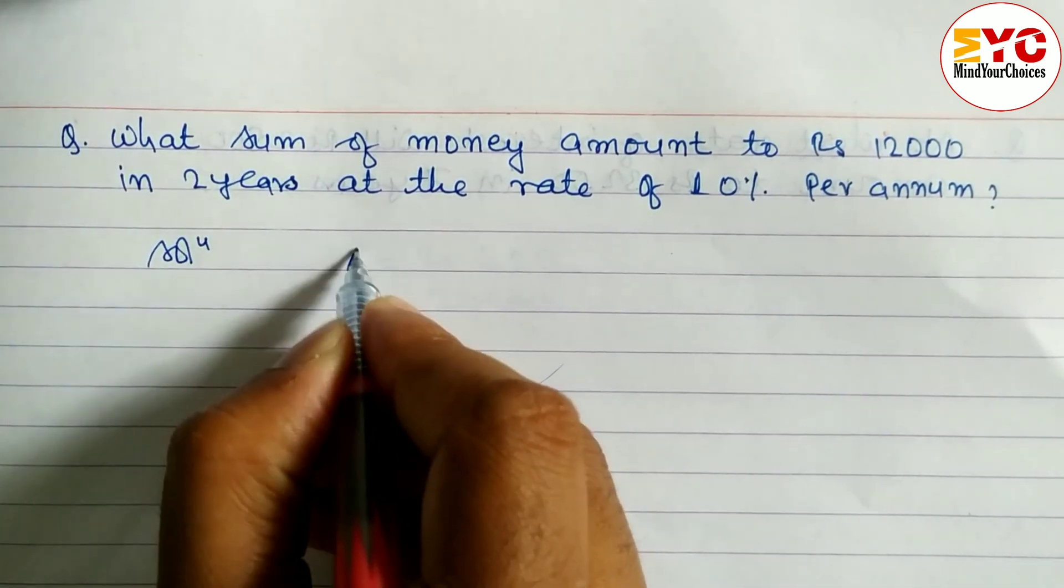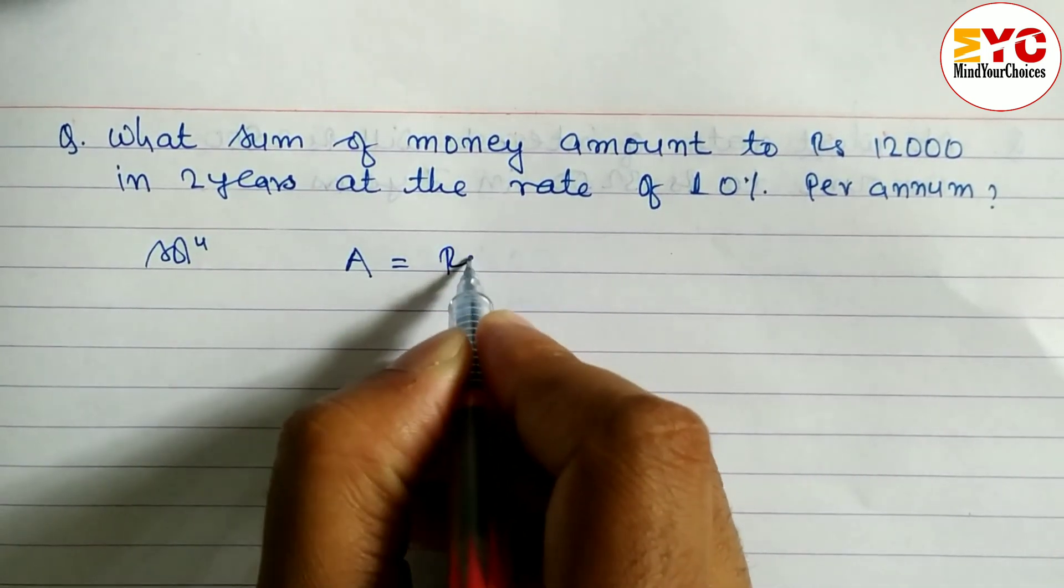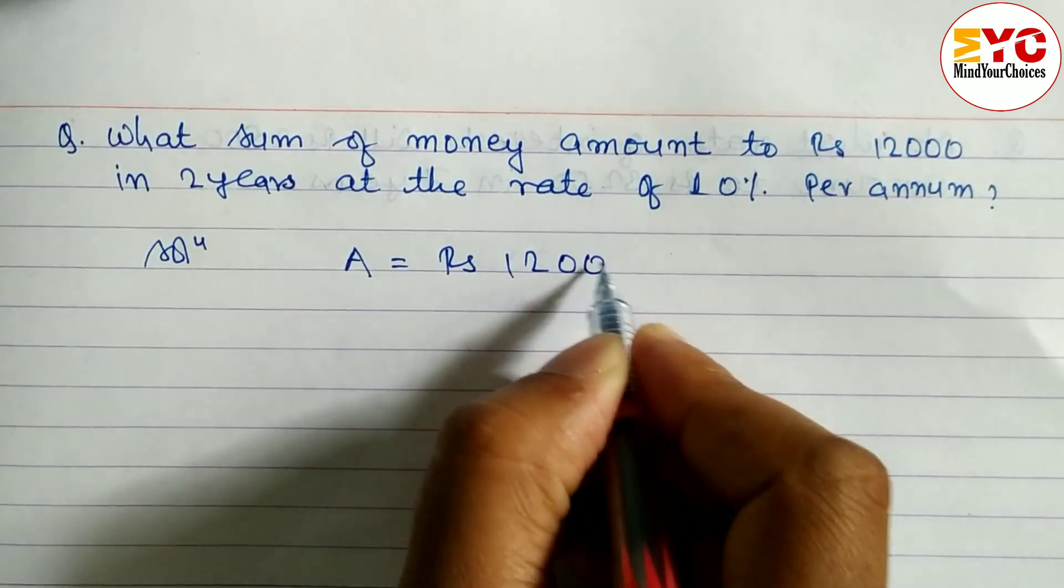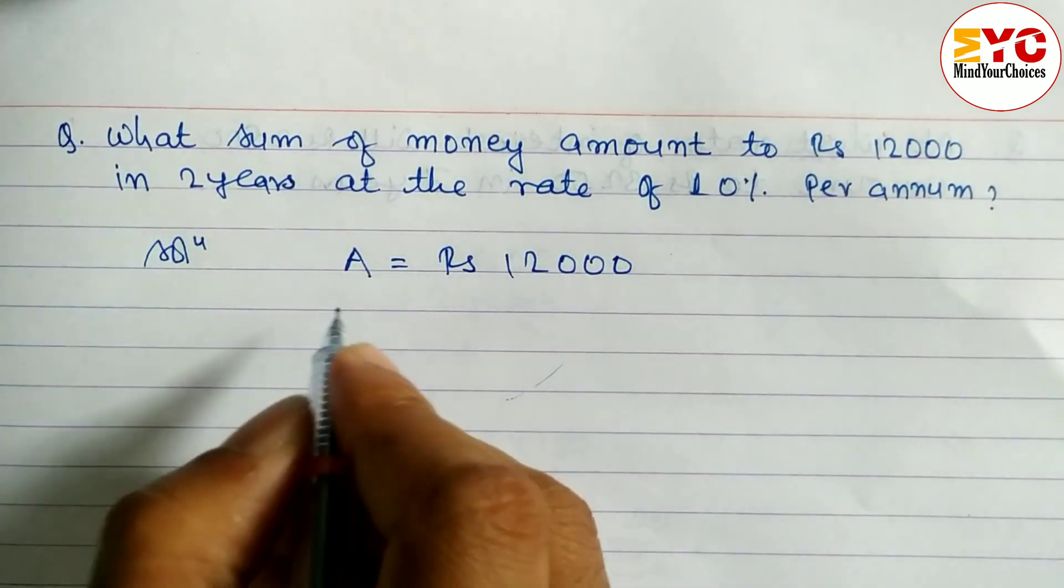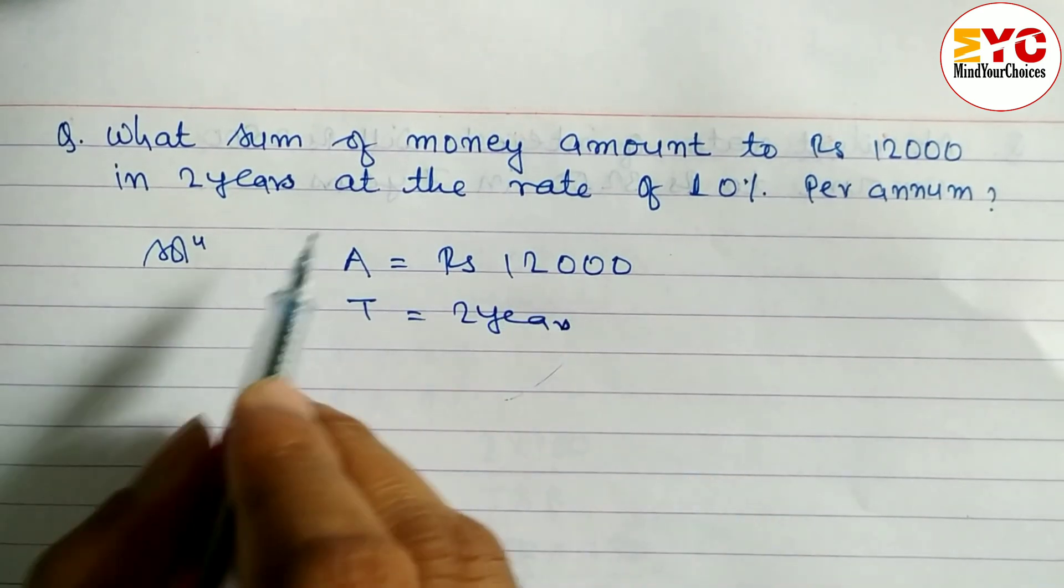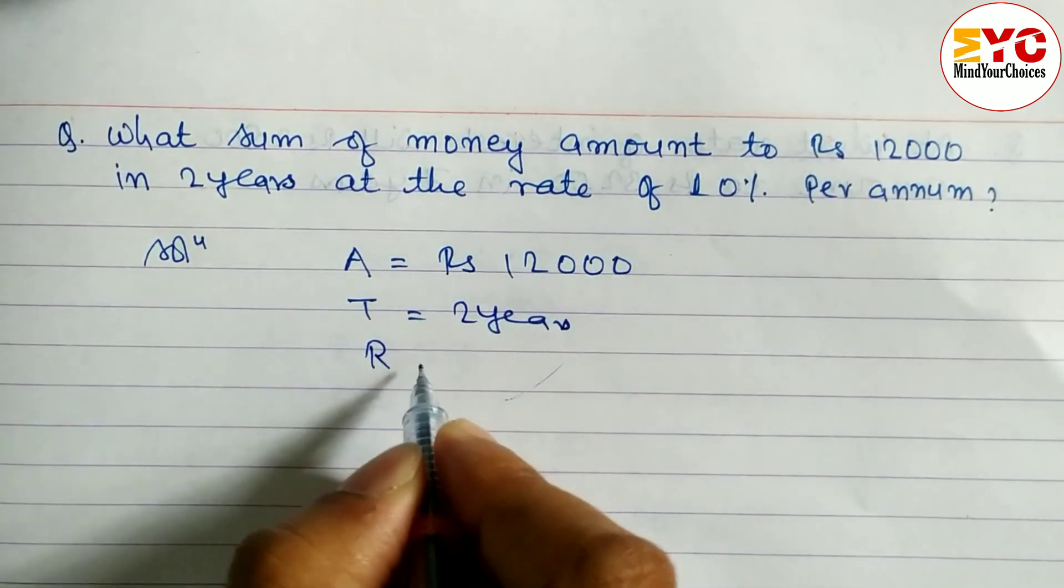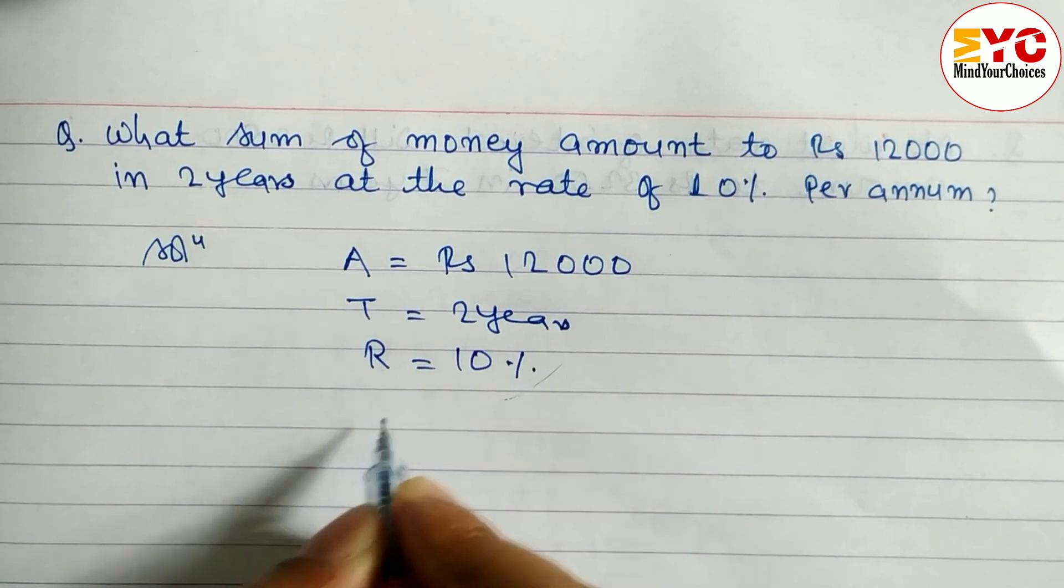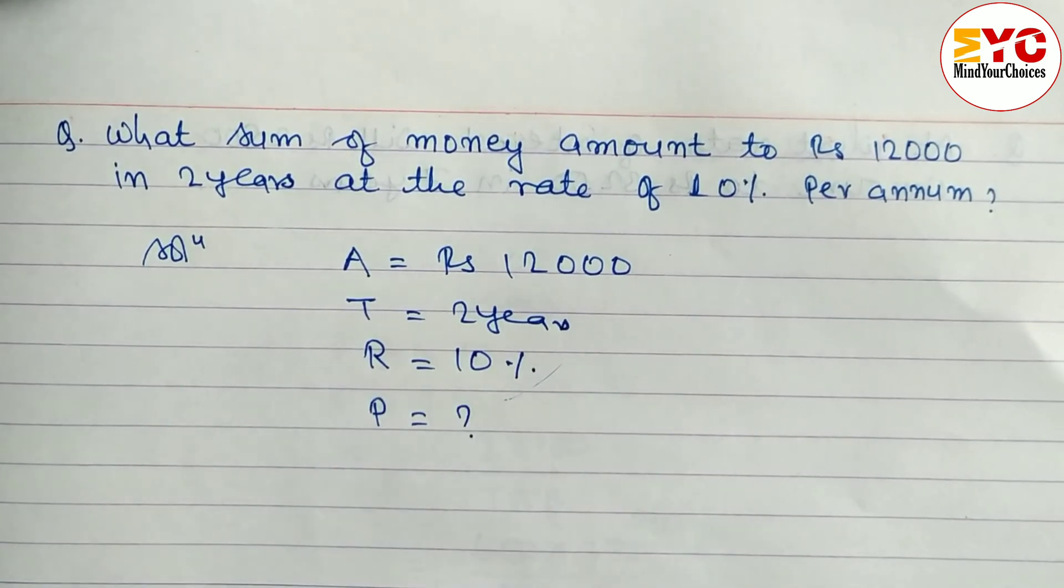So let's take a start. We have to write all the information. First of all, amount is equal to Rs 12,000 in two years. Time is equal to two years. After that, at the rate of 10 percent, so R is equal to 10%. And we have to find out principle.